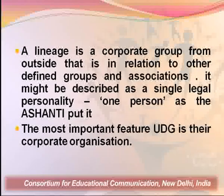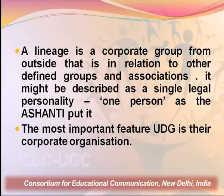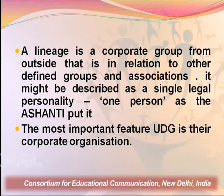It might be described as a single legal personality — one person, as the Ashanti put it. This is talking about the relation between one lineage versus another. In a conflicting relation, lineage A is a unity in contrast to lineage B. But that does not mean everyone within is identical — it is only a unity from outside, which stands true when there is a conflict and the settlement of that conflict needs to be addressed.